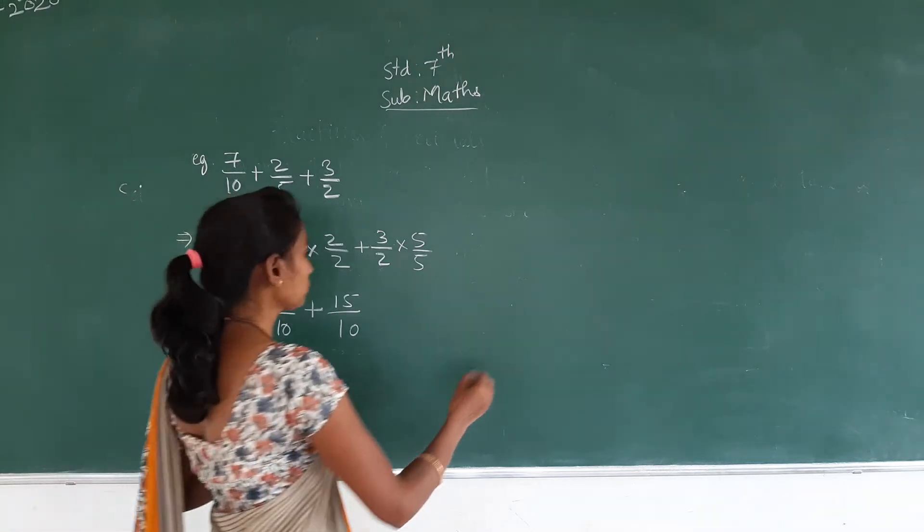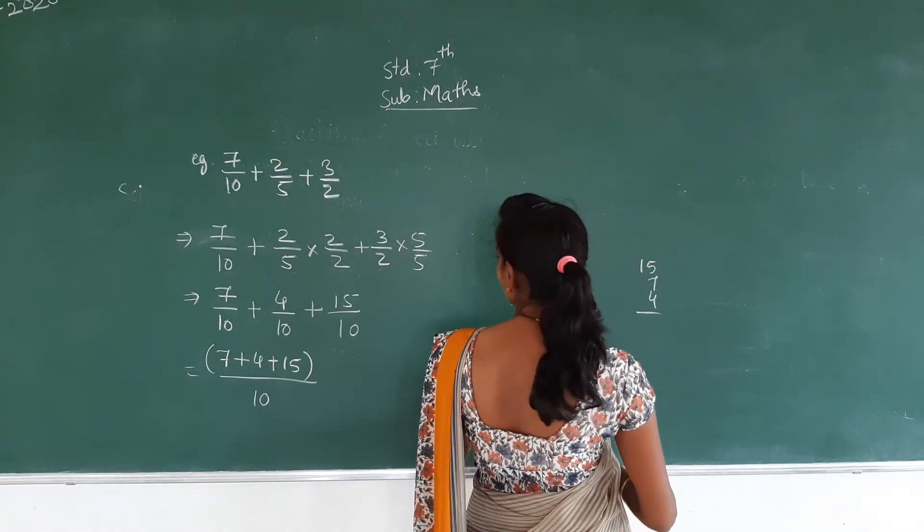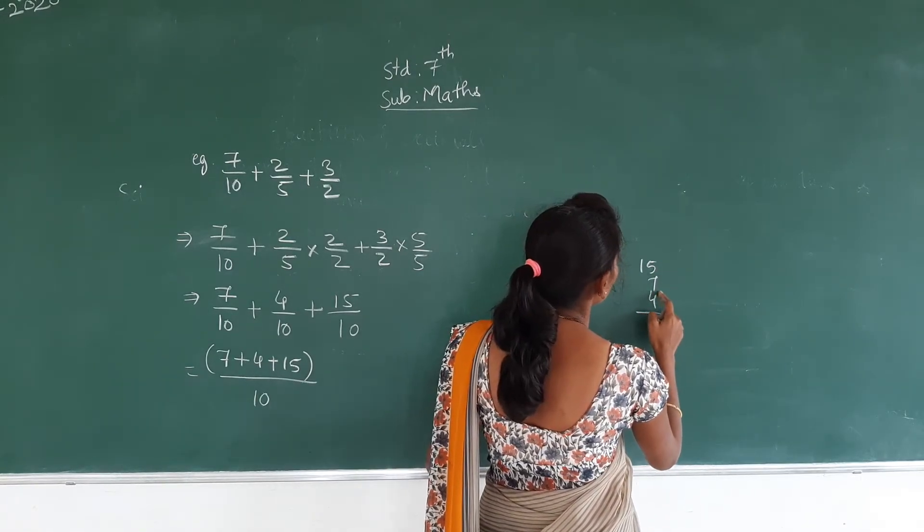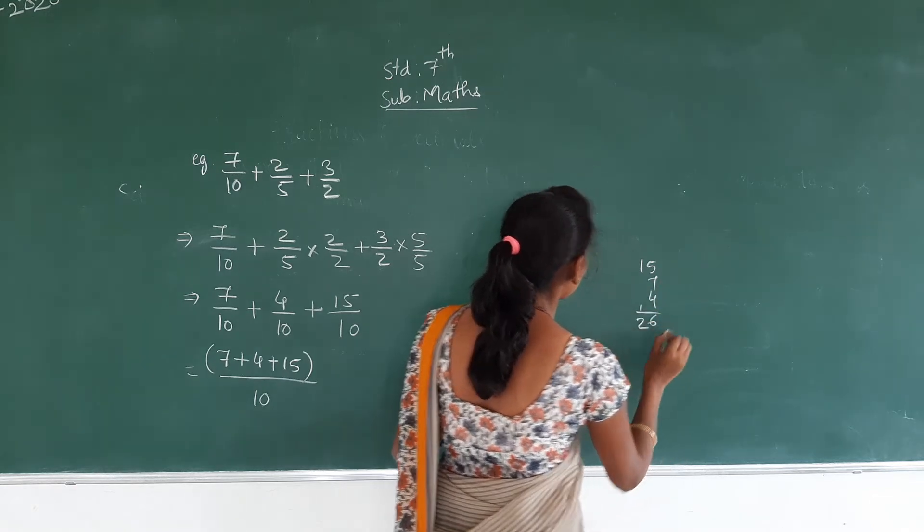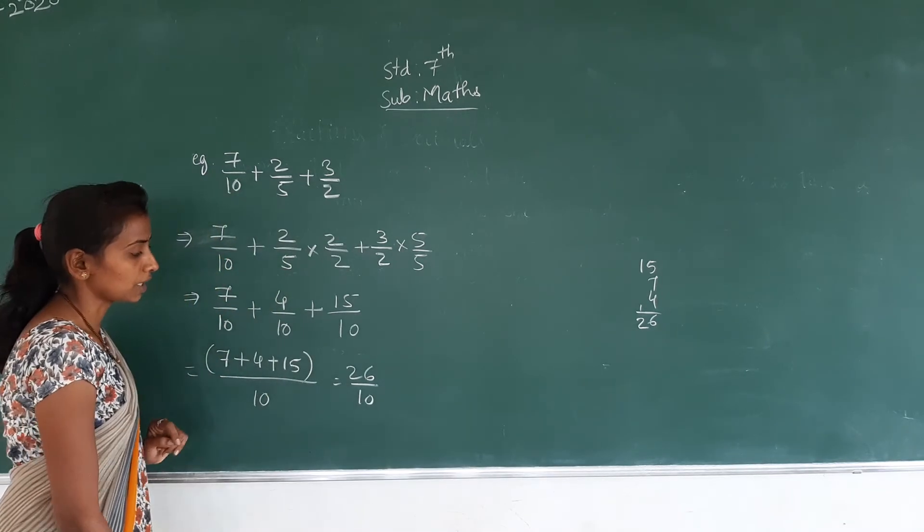Now we have to add 15, 7, 4. So 12, then 26. 26/10 comes here.